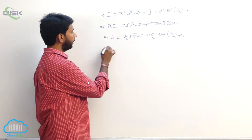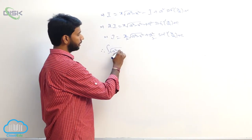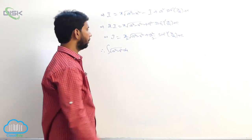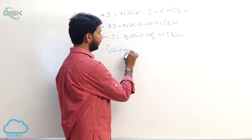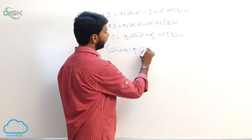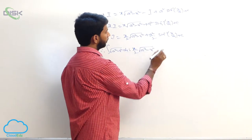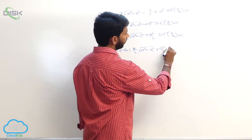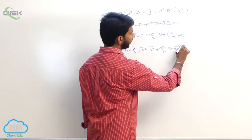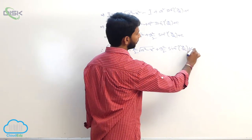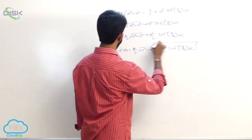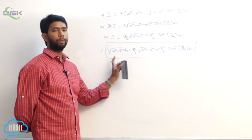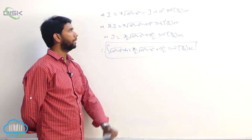Therefore, integral of root of a square minus x square dx is equal to x by 2 into root of a square minus x square plus a square by 2 into sine inverse of x by a plus some constant. This is the value of integral of root of a square minus x square.